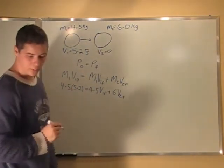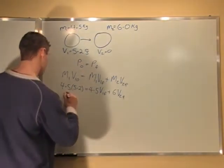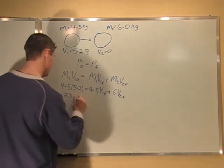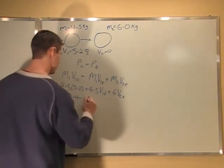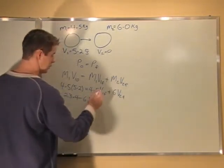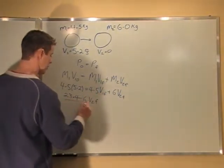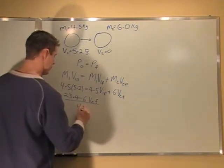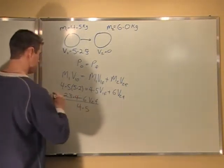So 4.5 times 5.2 gives me 23.4. Subtract off 6 V2F and that leaves me with 4.5 V1F where I divide by 4.5 and that's what V1F equals.